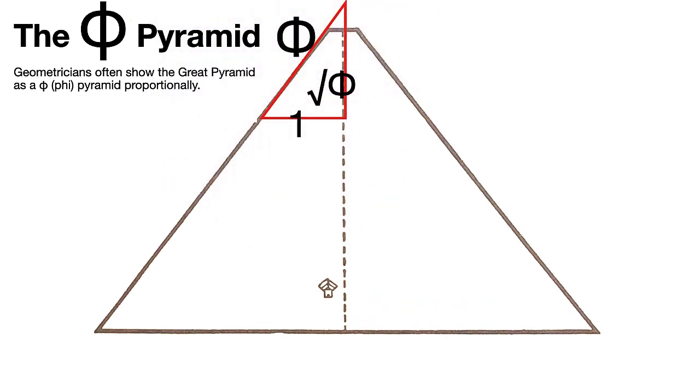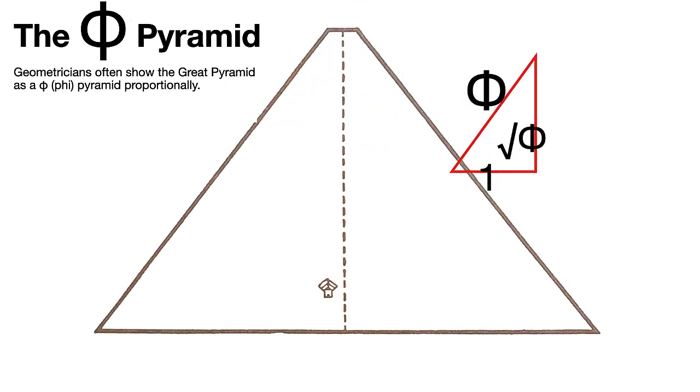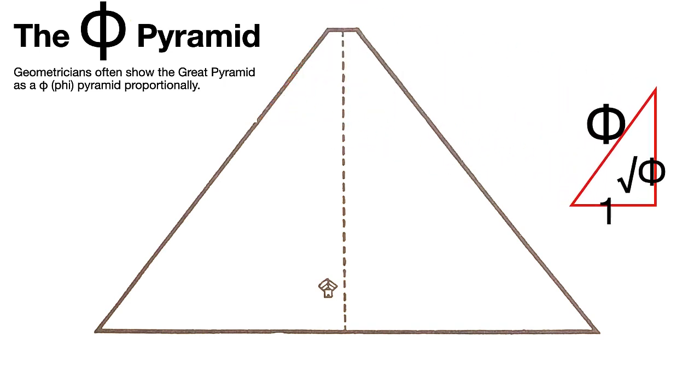I'm showing you the top there. You've got the hypotenuse of Phi, the height of the square root of Phi, and the half base of 1. So let's put that off to the side, that beautiful Phi Pyramid.